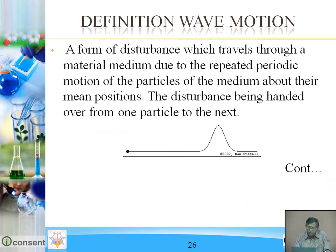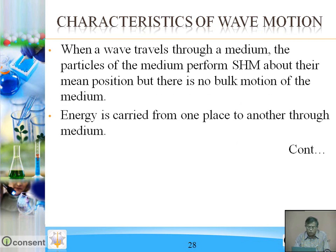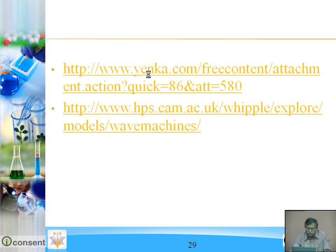Definition of wave motion: a form of disturbance which travels through a material medium due to the repeated periodic motion of the particles of the medium about their mean position, the disturbance being handed over from one particle to the next. Conditions of wave motion: there must be a restoring force which tends to bring the body to its original position — that is elasticity of the medium. The medium must have inertia due to which the body moves beyond mean position, and friction must not be too large. Energy is carried from one place to another through the medium.